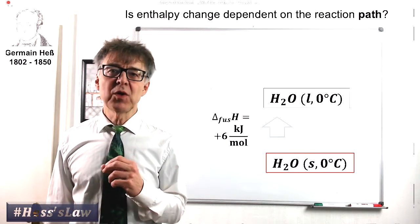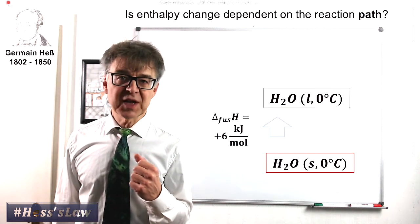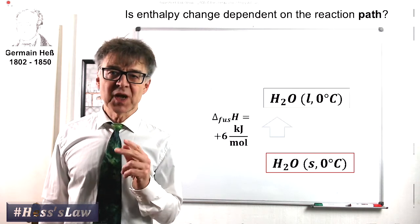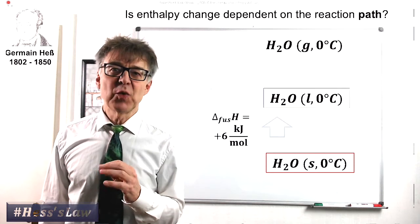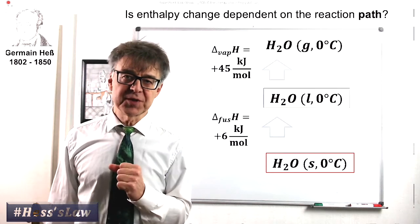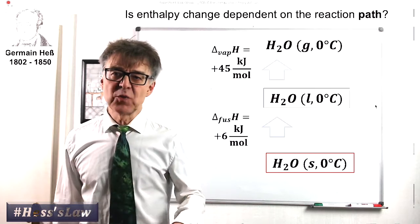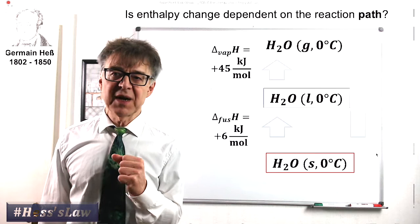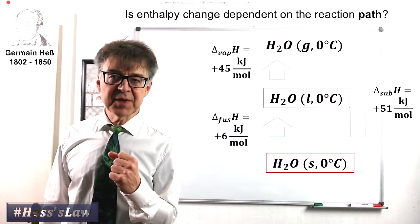If we melt one mole of solid ice at zero degrees centigrade to one mole of liquid water at zero degrees centigrade, we need six kilojoules. If we evaporate the liquid water at zero degrees centigrade, we need another 45 kilojoules. So if we were to evaporate the solid ice right away, then we need the sum of these two heat amounts, that is 51 kilojoules. This is a statement of Hess's law.